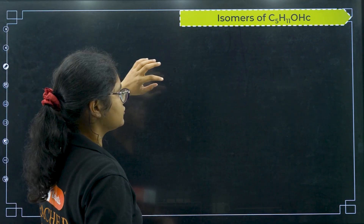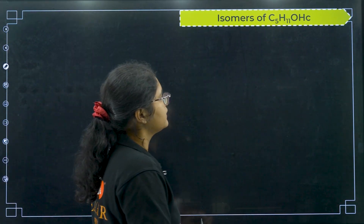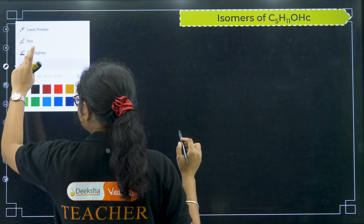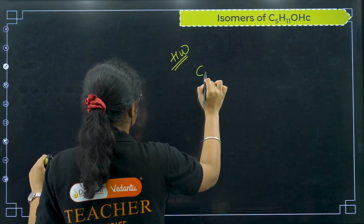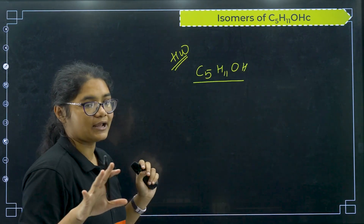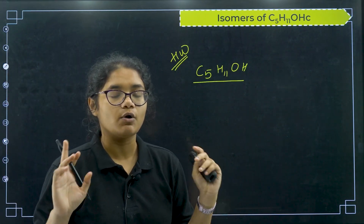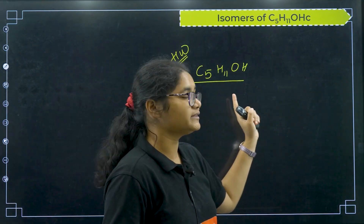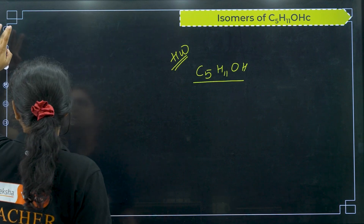Your homework question: draw the isomers of C5H11OH and tell me the total number of isomers you will be getting for this compound. Comment down the answer — I will tell you the answer in the next class.